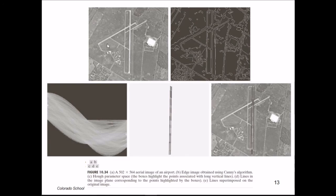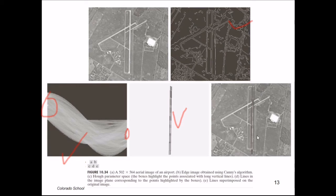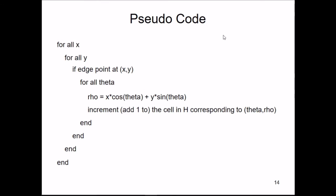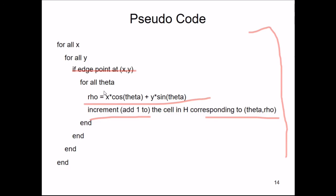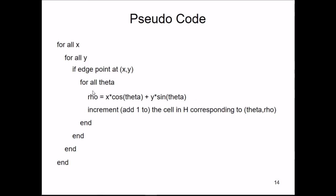As an application example: a 502×564 aerial image of an airport. The edge image is obtained using the Canny algorithm, then the Hough parameter space is computed. Highlighted boxes mark the points associated with long vertical lines. The corresponding lines in the image plane — superimposed on the original — are very specific, clear, and usable. The pseudocode is: compute ρ = x·cos(θ) + y·sin(θ) for each edge point and increment cell H(θ, ρ) accordingly.